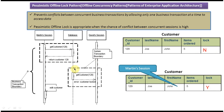A few seconds later, David's session asks for the same customer 129 information. At that point, the logic checks whether the lock is Y or N. Since Martin's session already holds the lock, it is Y, so the system returns a message that the customer record is locked. Only Martin's session can edit and update the information in the database.